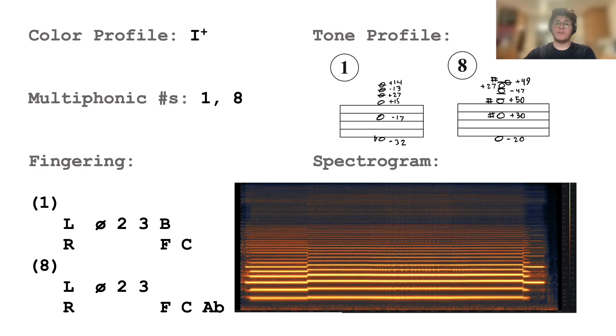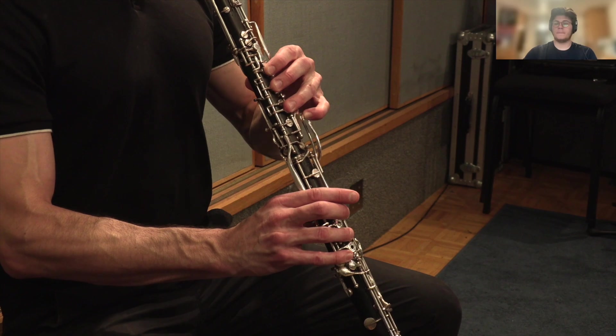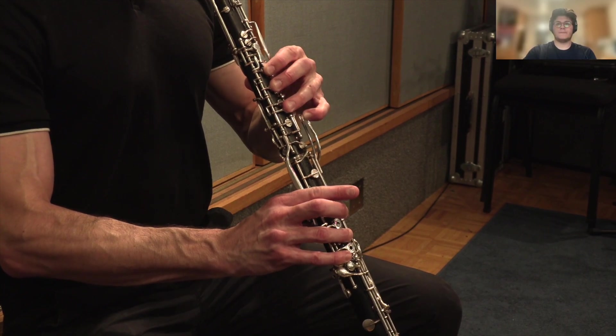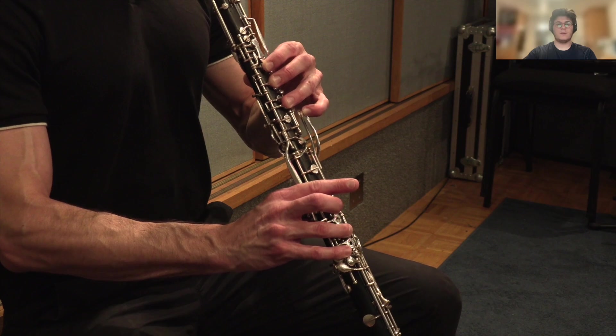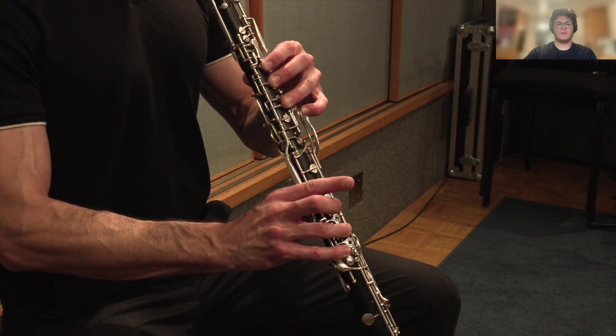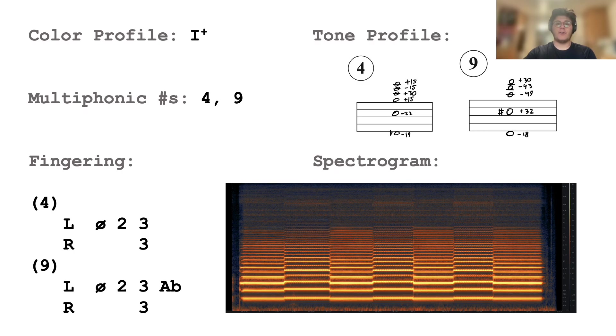This is the first color profile we consider adjacent to color profile one. This fingering toggles between color profile one and its first adjacent via the right A flat key. The performer is able to effect beating on this multiphonic number eight. This fingering toggles between color profile one and its first adjacent using the left A flat key. The performer noted that multiphonic nine requires a pressure change.